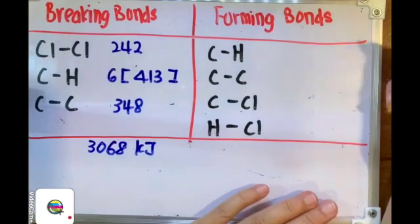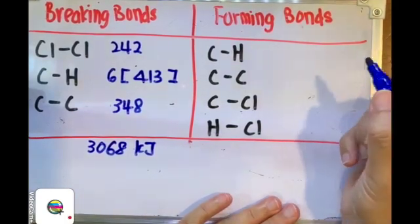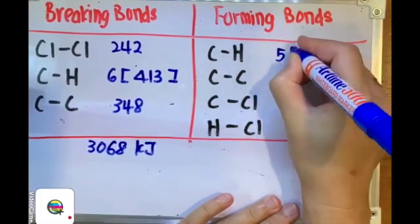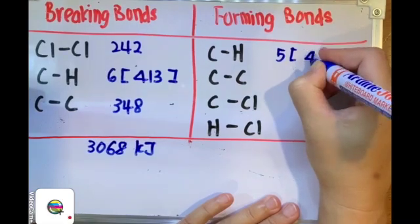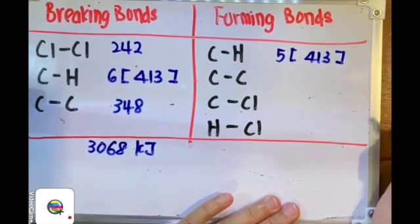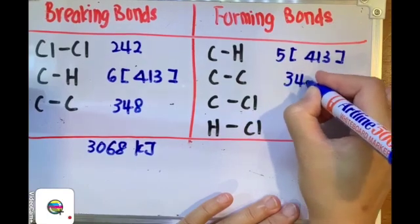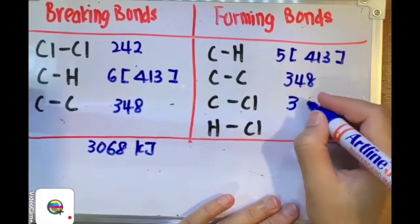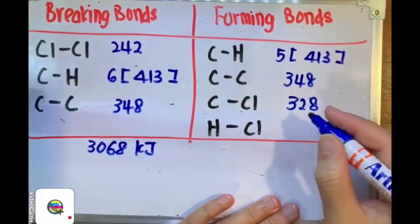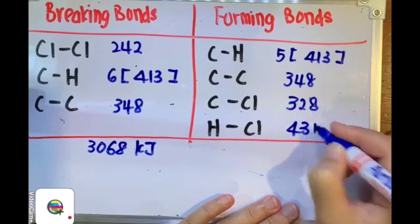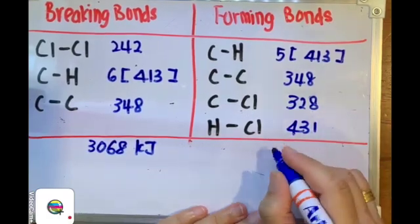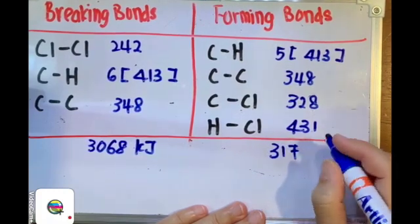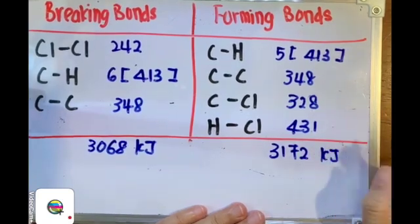And for formation of chemical bonds, energy that we need to release from carbon-hydrogen single bond, just now we have five. So five times 413. Carbon-carbon single bond just now will be one, so we write here 348. Carbon-chlorine single bond, 328. Hydrogen-chlorine single bond will be 431. So the total amount of energy to release during the formation of chemical bonds would be 3,172 kilojoules of energy.